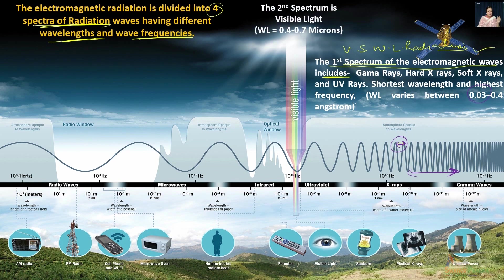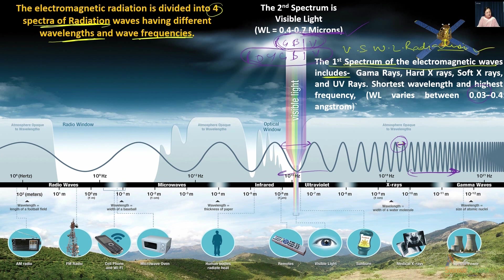The second spectrum is visible light, where the wavelength varies from 0.4 to 0.7 microns. In this spectrum the wavelength is somewhat higher compared to very short wavelength radiation, and consequently the wave frequency decreases. Our eyes are sensitive to this particular spectrum — we can see in this section — therefore it is called visible light. The colors of visible light are violet, indigo, blue, green, yellow, orange, and red (VIBGYOR), all of which are perceivable in this radiation.